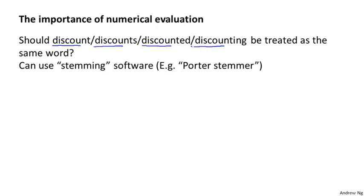In natural language processing, the way this is done is using a type of software called stemming software. If you ever want to do this yourself, search for the Porter stemmer, which is one reasonable piece of software for doing stemming — it will let you treat all of these words, discount, discounts, and so on, as the same word. But using stemming software, which basically looks at the first few letters of a word, it can help but it can also hurt. For example, the software may mistake the words 'universe' and 'university' as being the same thing, because these two words start with very similar characters.